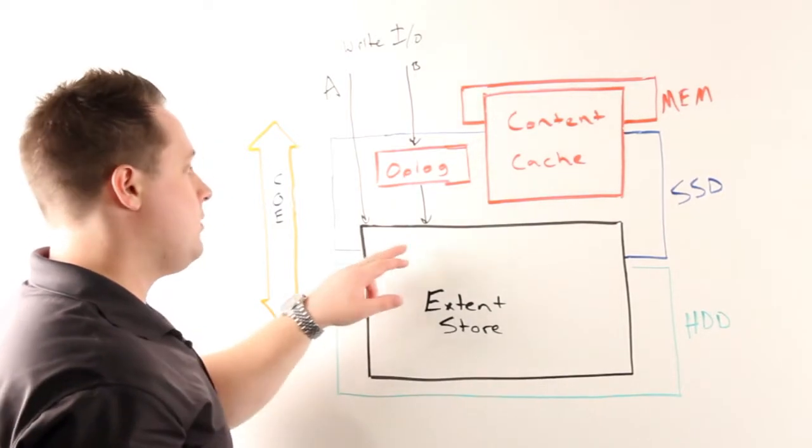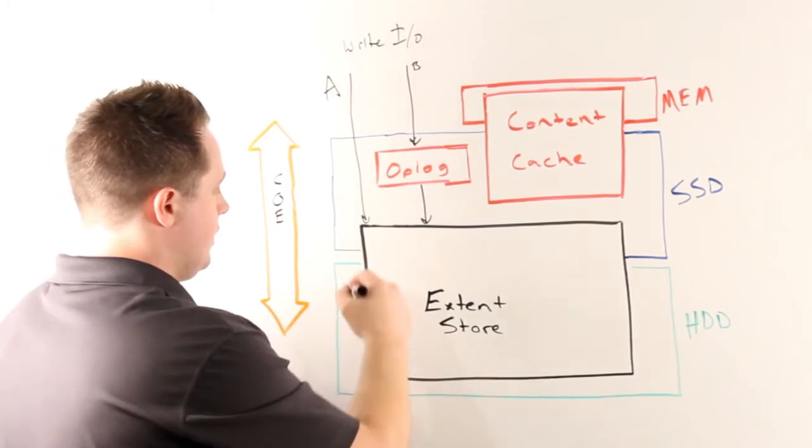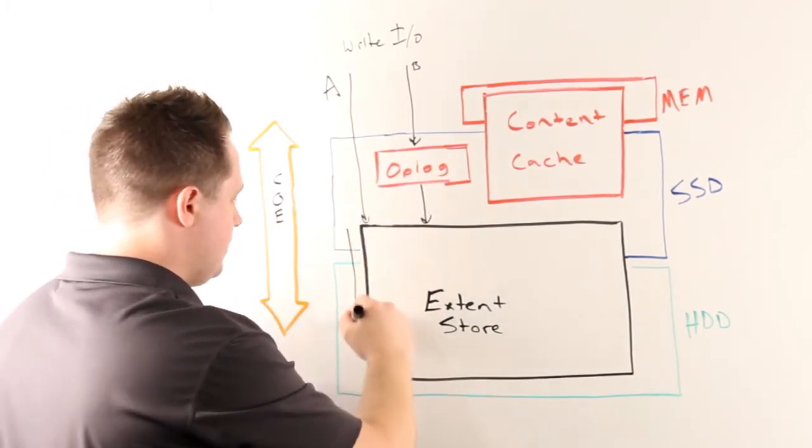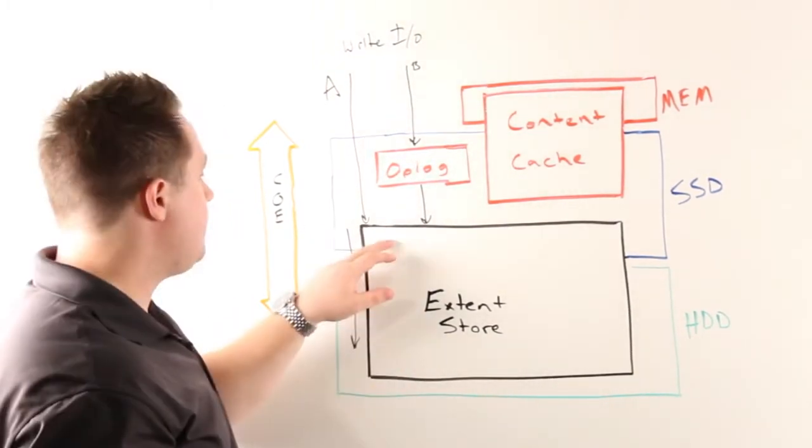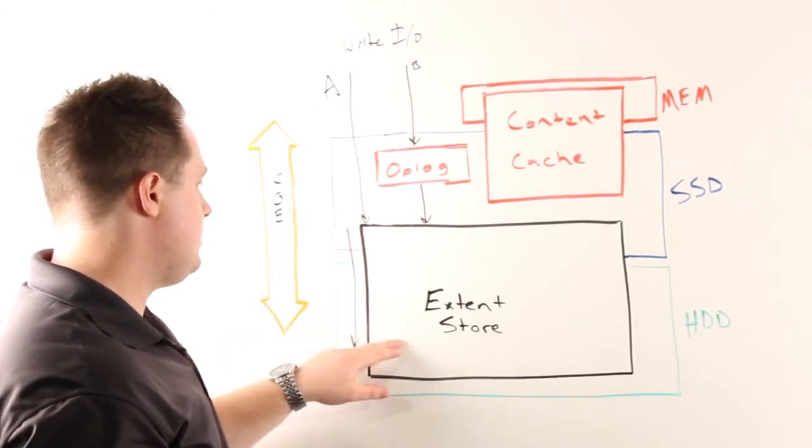From there, there are really two things. One is it's integrated with our ILM framework. The data needs to become cold, which means that data will be down-migrated from the SSD portion of the extent store to the HDD portion.